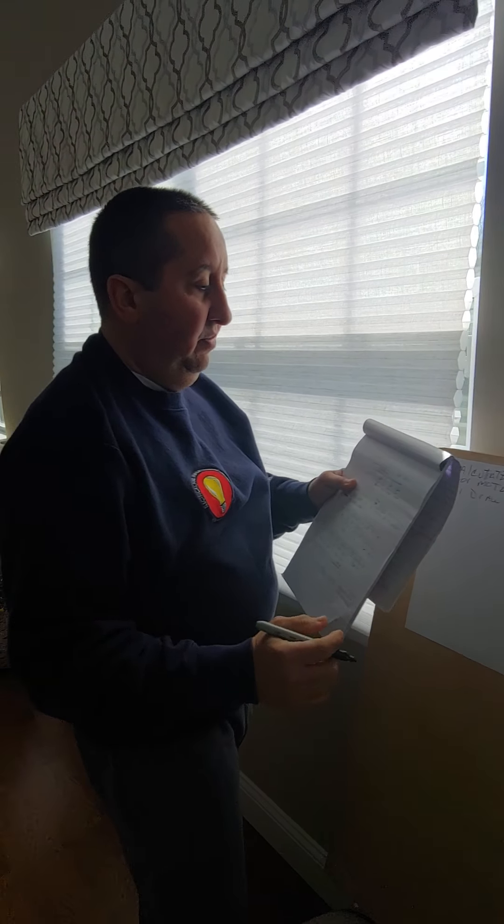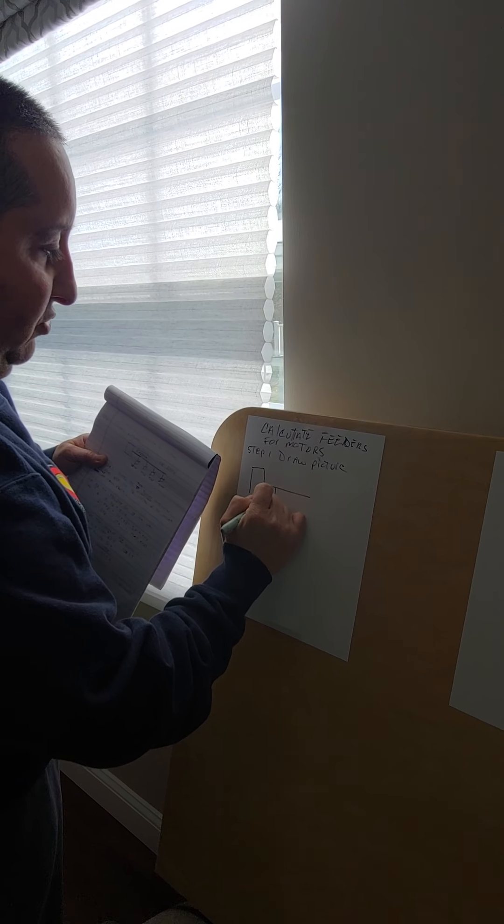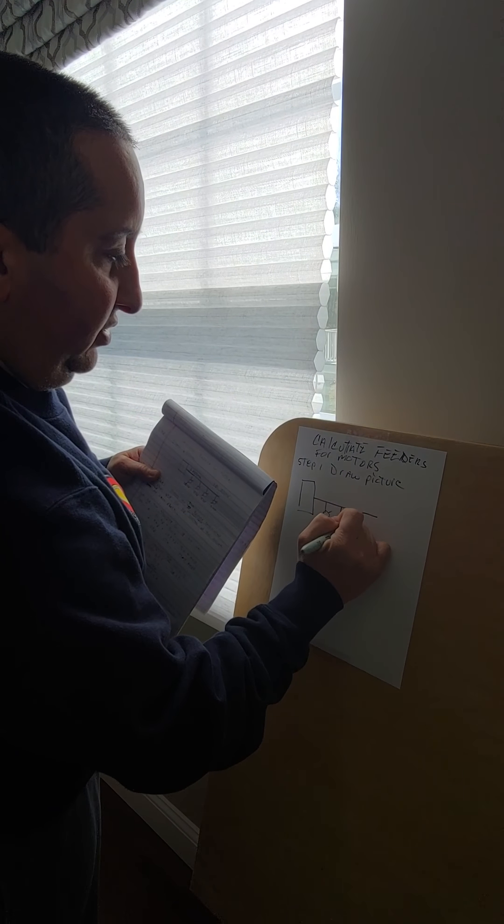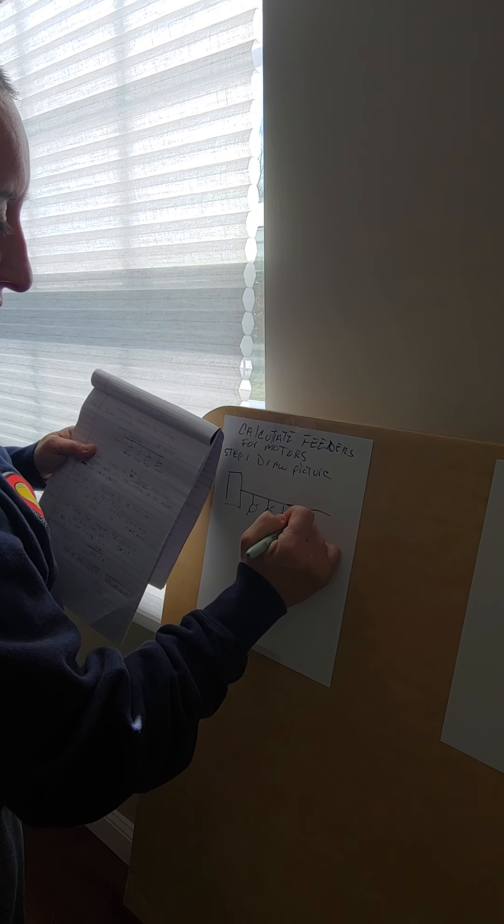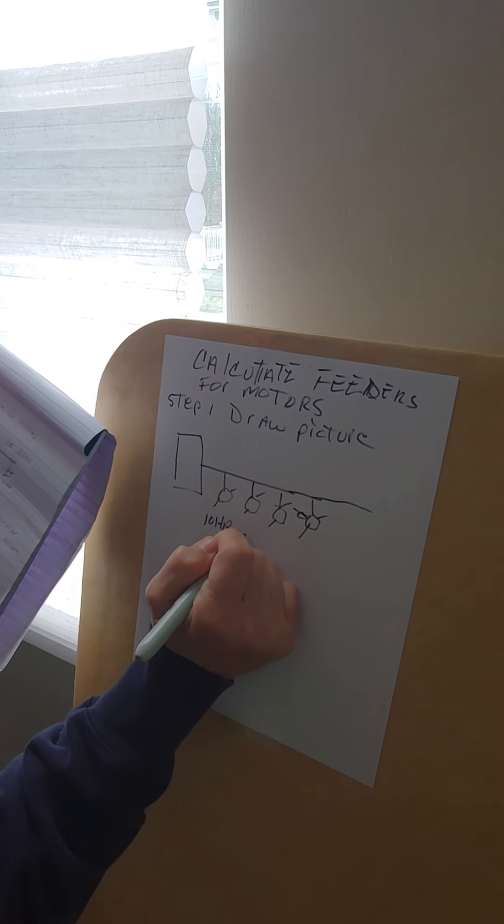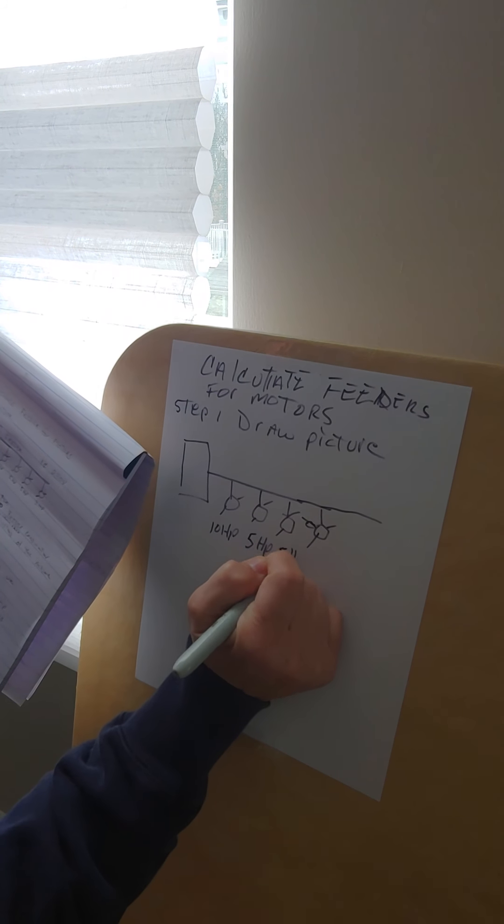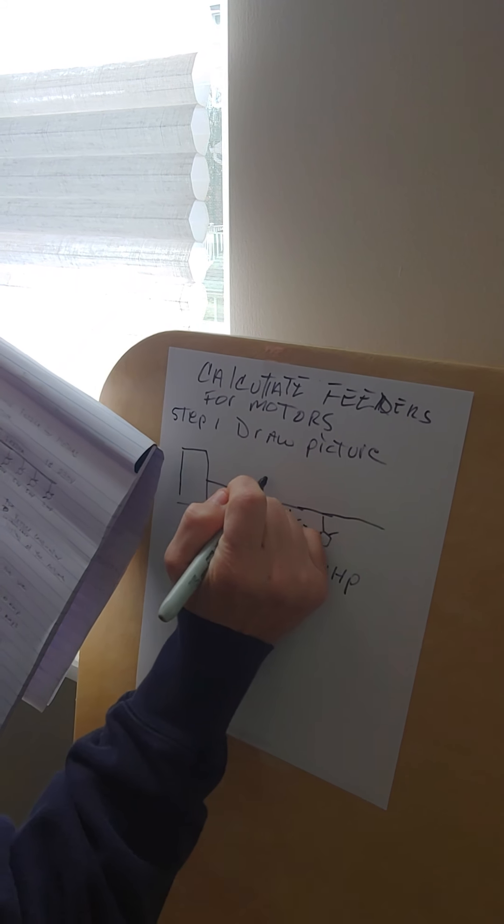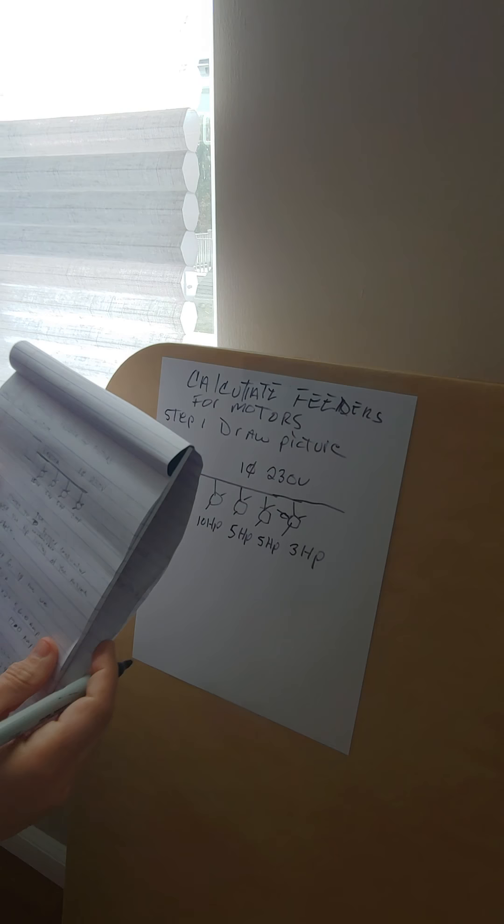In the problem, we have a panel, a feeder, and motors. For simplicity, we're just putting the motors and the feeders: one, two, three, four motors. This is a 10 horsepower, a 5 horsepower, two of them actually, and a 3 horsepower. The voltage is single phase, 230 volts. That's step one.